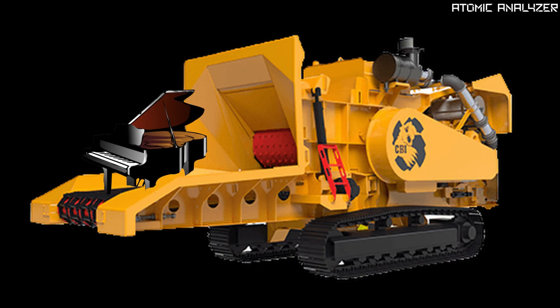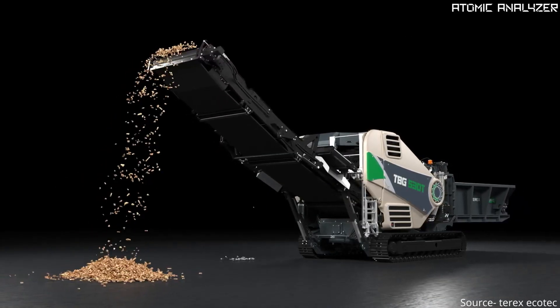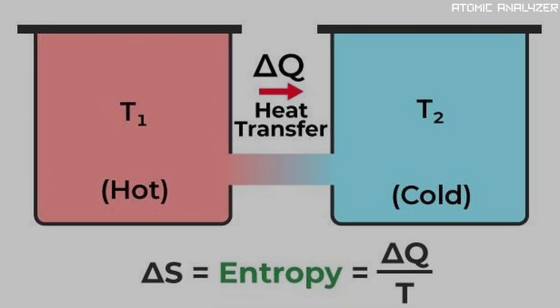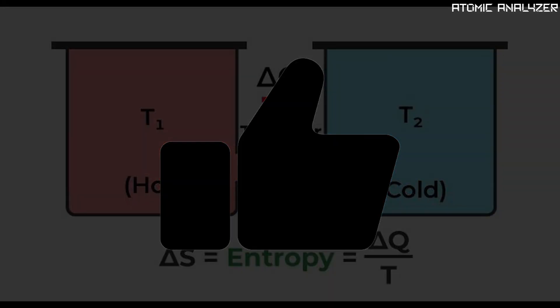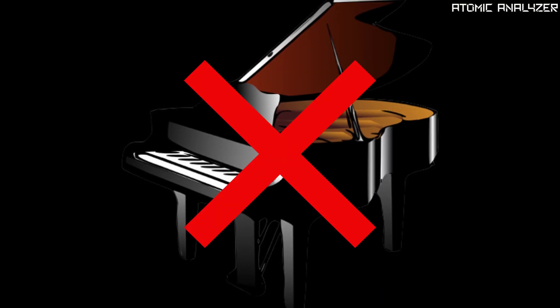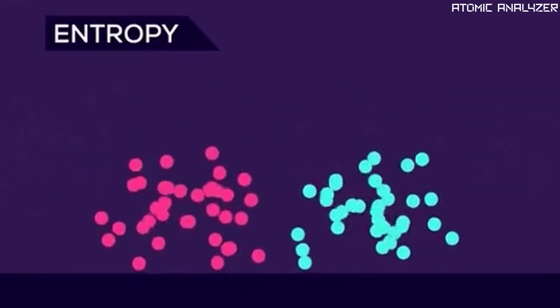As an example, say you throw a piano into a wood chipper. Out comes a bunch of pulverized debris. Disorder in the system has increased and the second law of thermodynamics has been satisfied. But if you throw a bunch of random pieces into the same wood chipper, you won't get a fully formed piano out of it, because that would cause disorder to decrease.